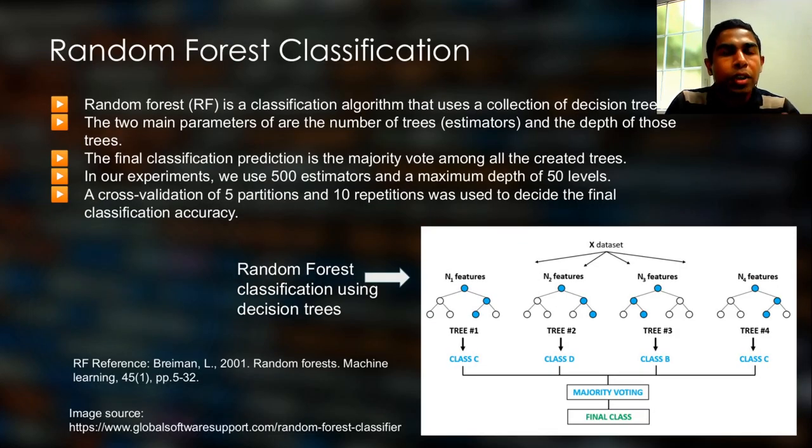So we need to talk a little bit about random forest classification because it is the classification algorithm we use in each experiment. Random forest classifiers use a collection of decision trees to classify data. The two main parameters are the number of trees or what we call estimators and the depth of those trees. The final classification prediction is the majority vote among all the decision trees in the random forest. In our experiments, we use 500 estimators and a maximum depth of 50 levels. In order to improve the reliability of our final results, we use cross validation with 5 partitions and 10 repetitions in each of our experiments.